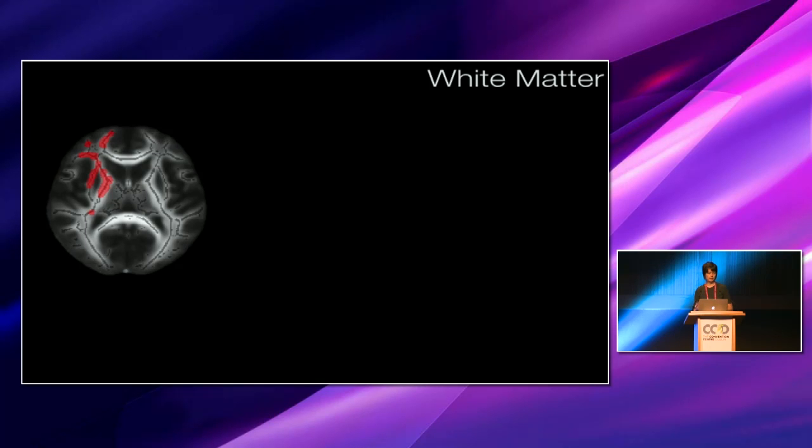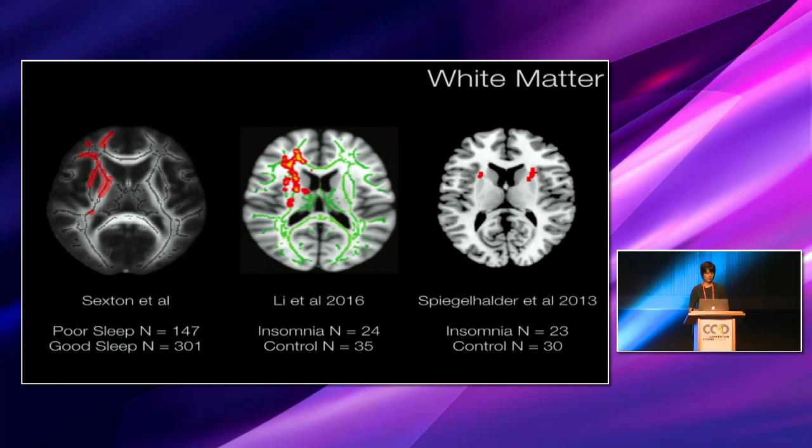Even after we added in BMI, blood pressure, depressive symptoms, psychotropic medication, physical activity, and MOCA score as covariates, then the regions shown here in red remain significantly different for radial diffusivity. And if we compare the anatomy of these findings to those which were found to be significant in clinically diagnosed insomnia, where confounds such as psychiatric comorbidity was carefully excluded, then you can quite clearly see the parallels in the anatomy of these results.